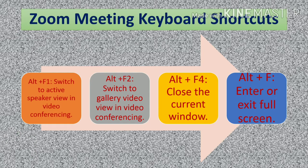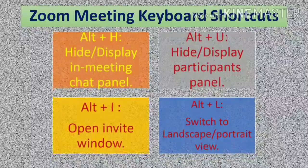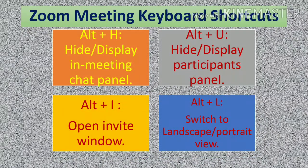Alt plus F4 closes the current window. If you press Alt plus F, it will enter or exit full screen. Alt plus H is for hide or display the in-meeting chat panel. Alt plus U is for hide or display the participants panel. Alt plus I is for opening the invite window. Alt plus L is for switching to landscape or portrait view.